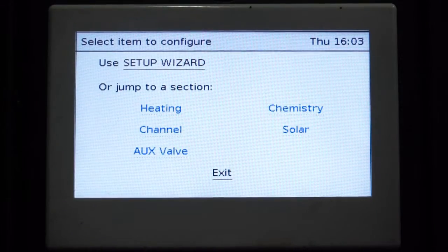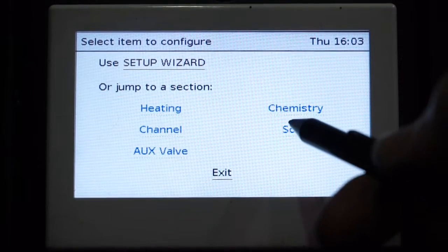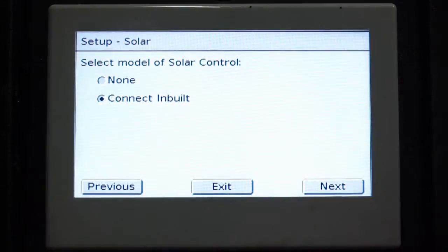Now, because we've previously set up and programmed our controller, we only need to make adjustments. We will go to Solar. We will now select Connect Inbuilt.